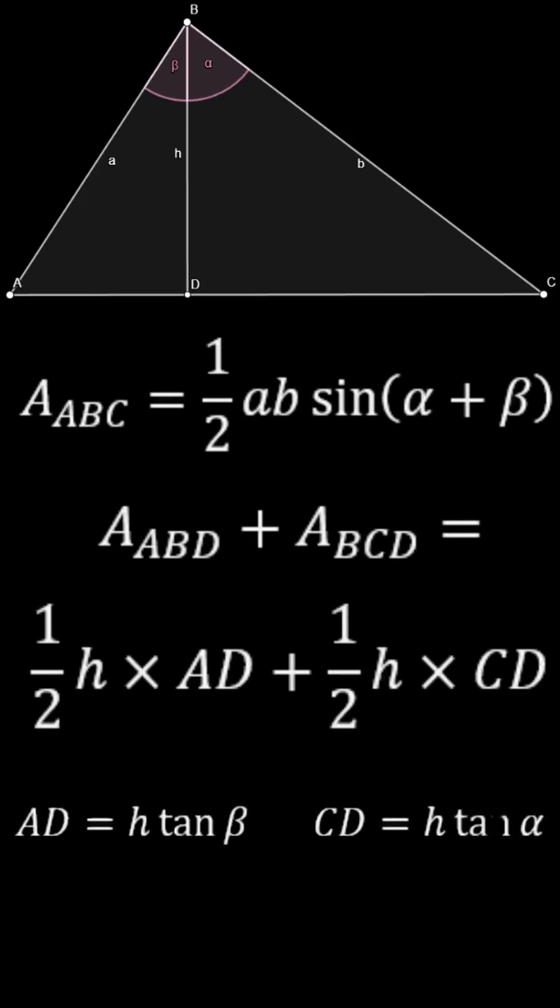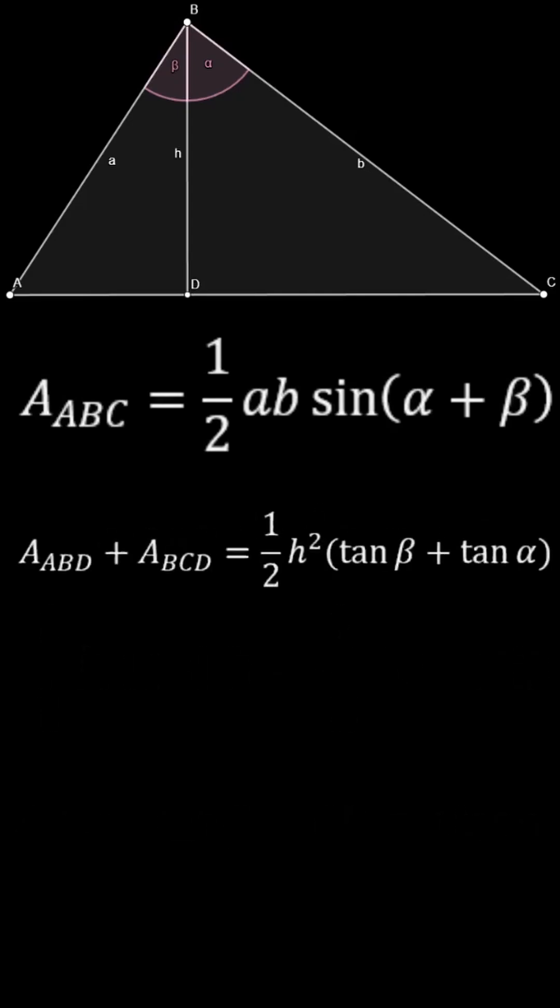Here the base of ABD is H times the tangent of beta, and the base of CBD is H times the tangent of alpha. We can substitute these values for their bases to get such an expression with the tangents on screen.